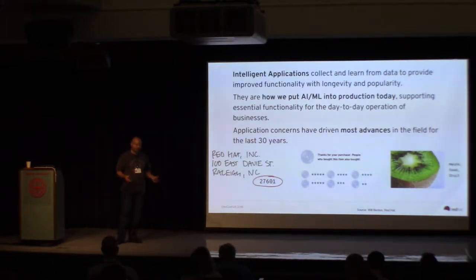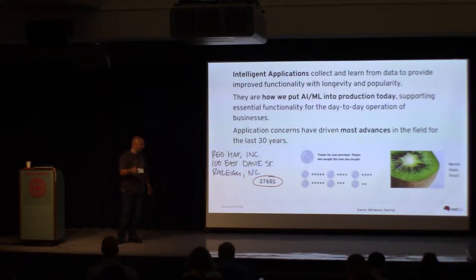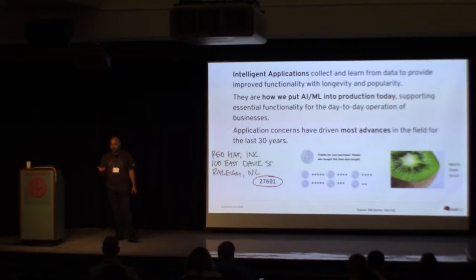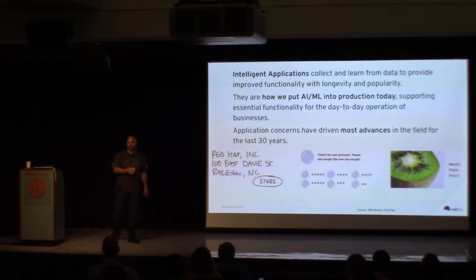Handwriting recognition was well understood, but it became practically usable when the post office provided large amounts of data to researchers to solve letter address recognition — and then it was solved. Rating systems are machine learning algorithms. Image recognition is another example where, in principle, it was understood it could be done. We suddenly had the compute power to do it in the last five to eight years, and then data became available, driven by a business use case with a speculative application of theoretical capabilities.